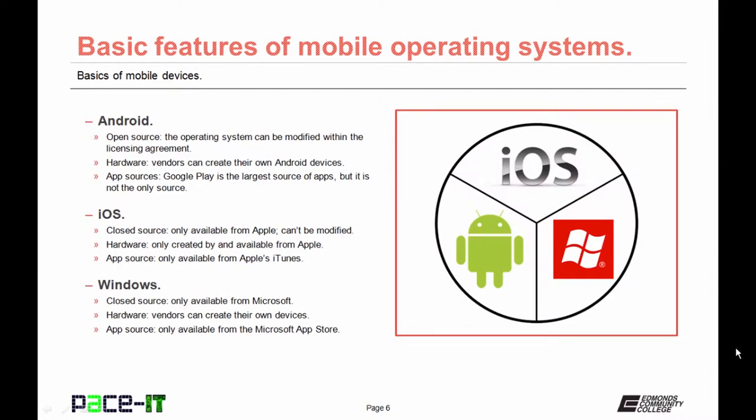Let's start by talking about the Android operating system. It's open source — the operating system can be modified by anybody within the licensing agreement. Android can be placed on any hardware, so vendors can create their own Android devices. Apps and programs are available for Android all over the place; Google Play is the largest source, but you can get them from other sources.